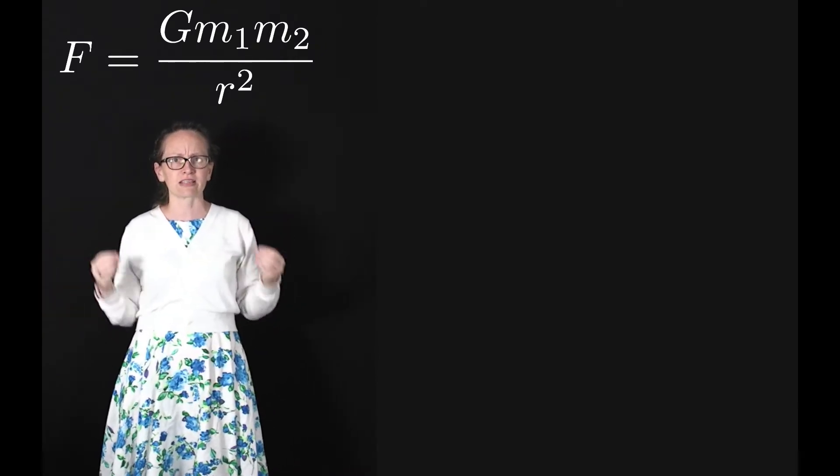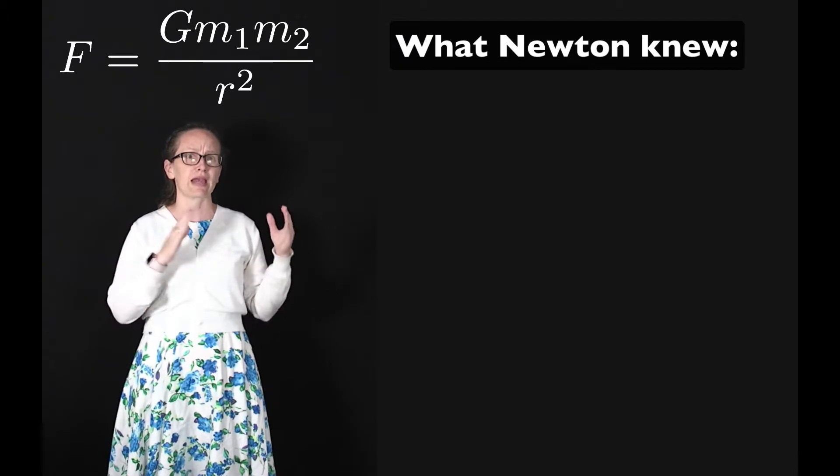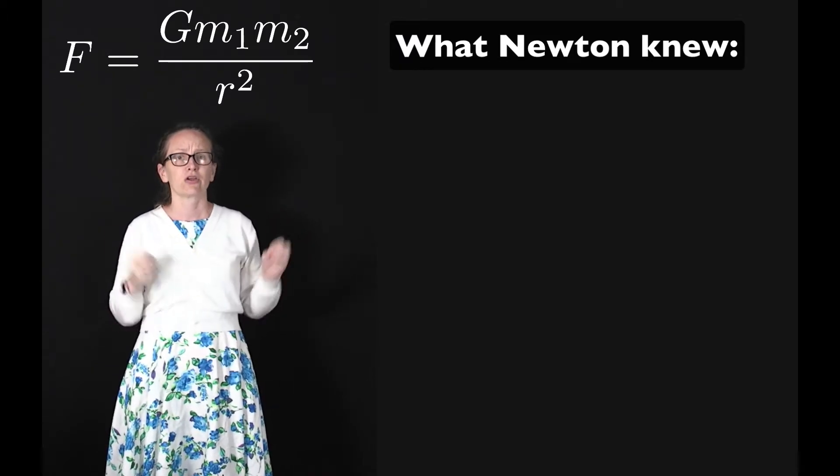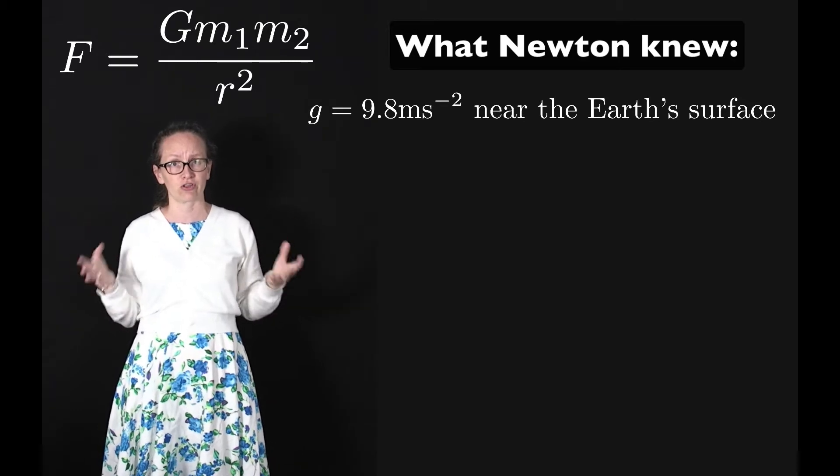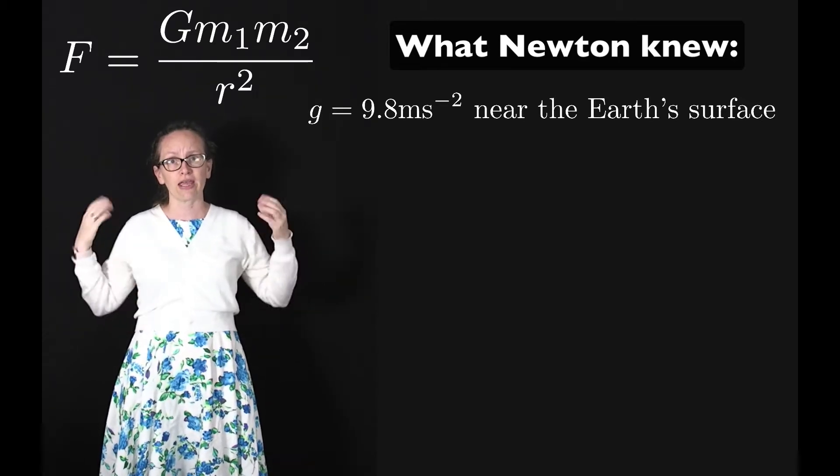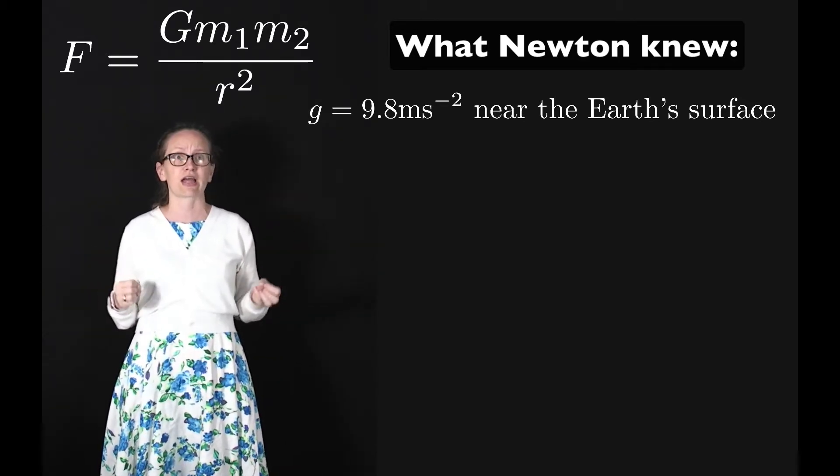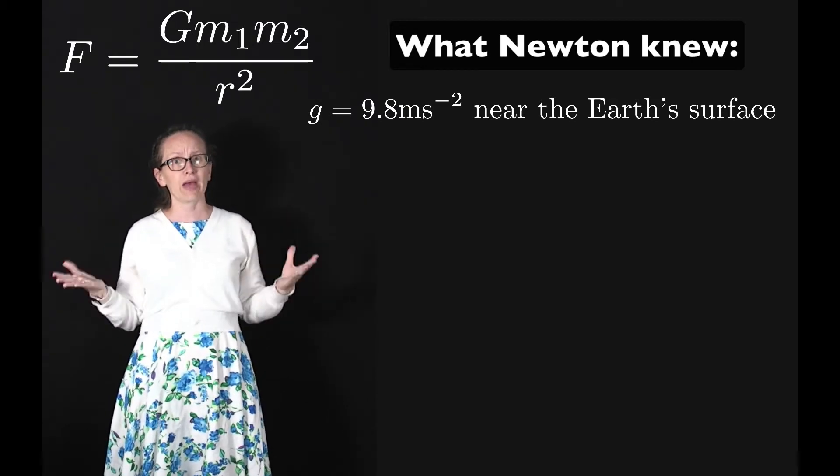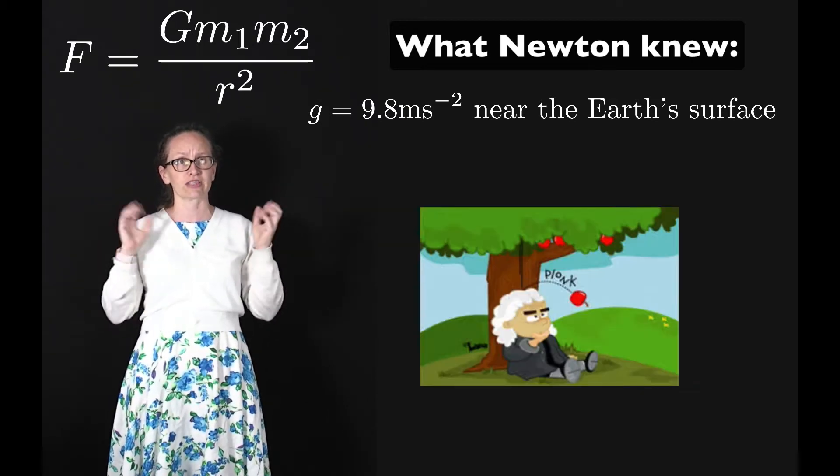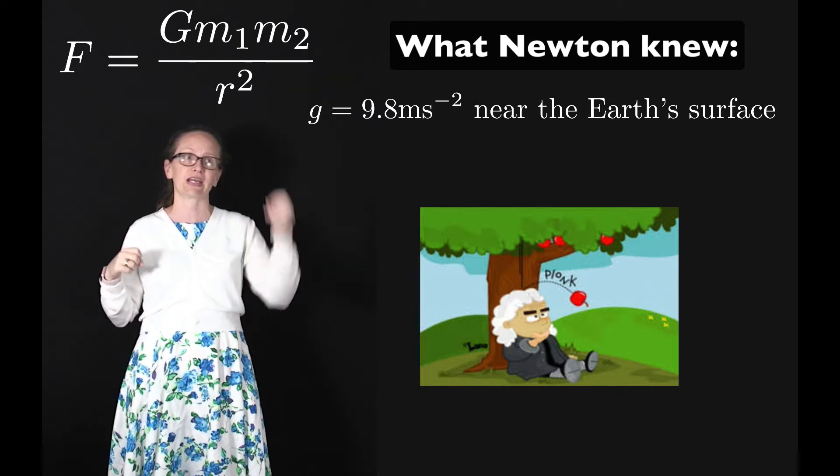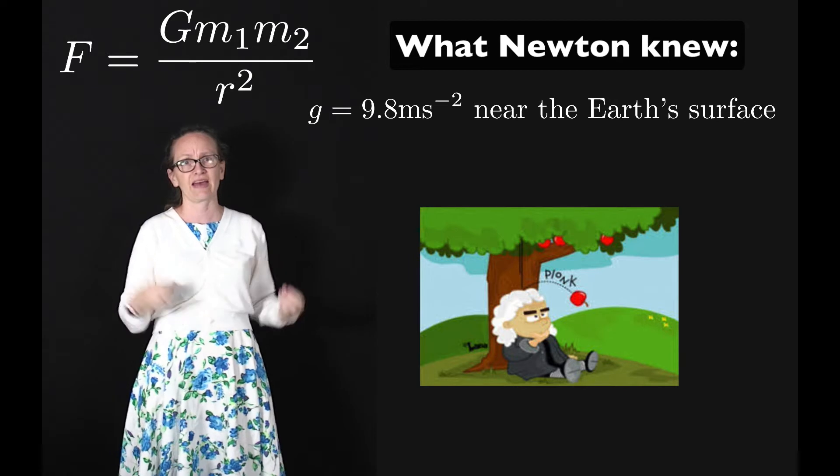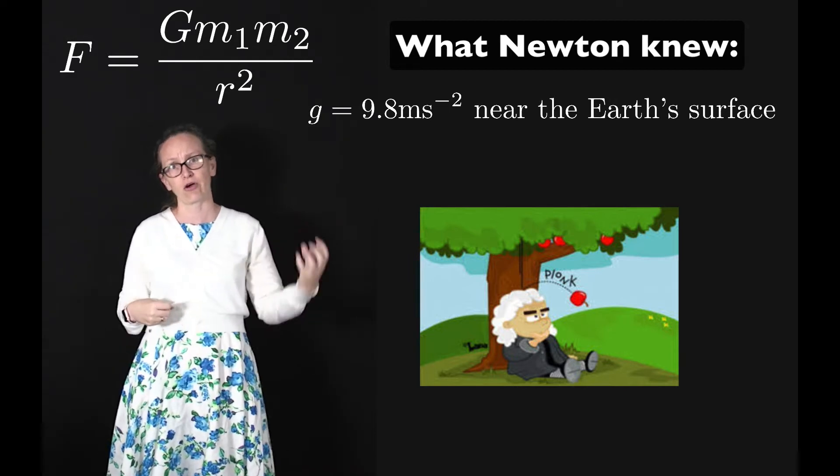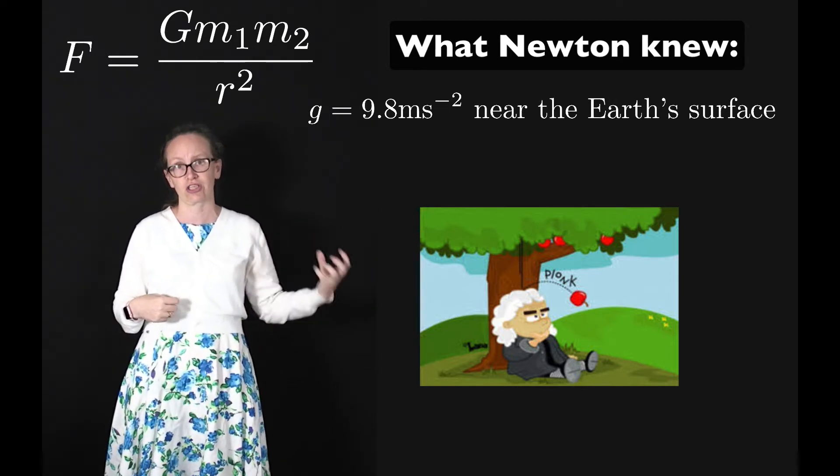There were several things that Newton needed to know to be able to come up with his theory. One of these was the acceleration due to gravity close to the Earth's surface. He could measure this and knew that it was 9.8 meters per second per second. You may have heard the story of Newton sitting under an apple tree and an apple falling down and hitting his head. Maybe this is where that story comes from. He did know how fast things fall close to the Earth's surface.